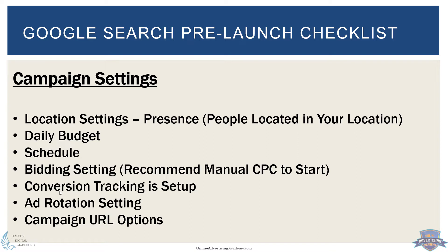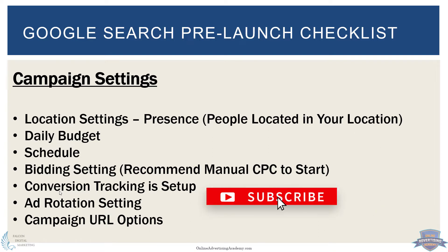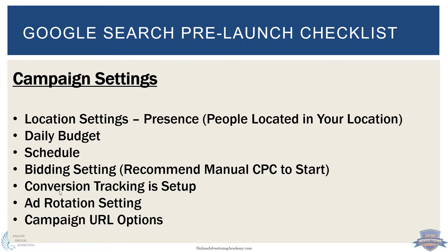Make sure your conversion tracking is set up. We recommend using Google Analytics — that's covered in the Google Analytics and tracking section. Google Ads also has its own tracking pixel, which is straightforward to set up. We prefer Google Analytics so that if you're running multiple marketing efforts — social media, SEO, traditional marketing — you have all the data in one place to compare Google versus Microsoft Bing, Facebook ads, SEO, or print.